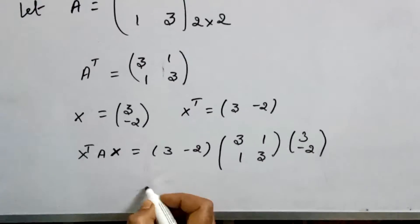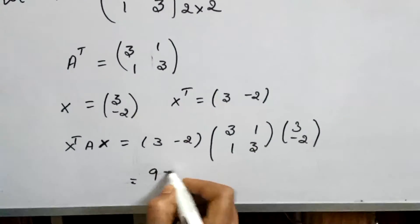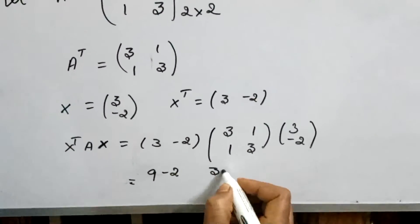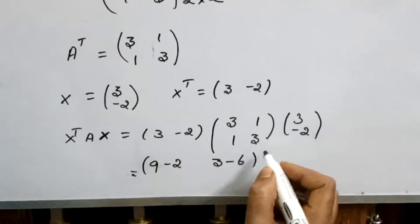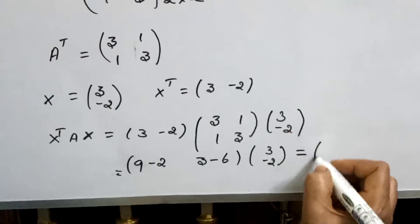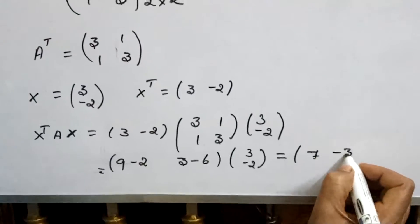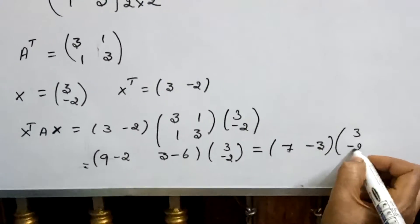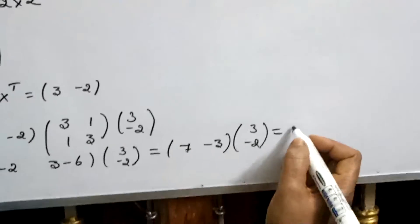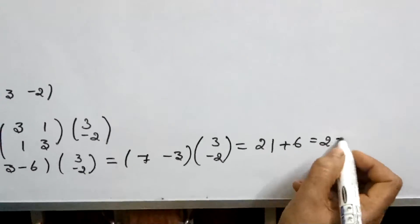We calculate the product. First row, first column: 9 minus 2 = 7. First row, second column: 3 minus 6 = minus 3. This gives us [7, -3] into [3, -2]. The product is 7 times 3 = 21, minus 3 times 2 = 6. This equals 27, which is greater than 0.